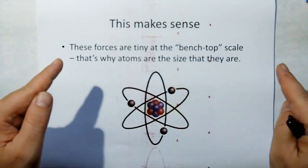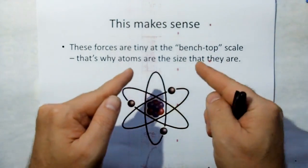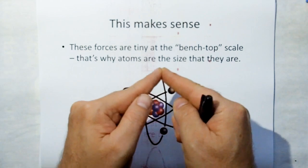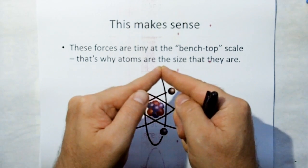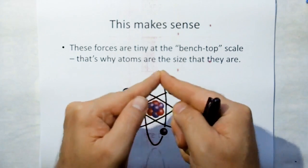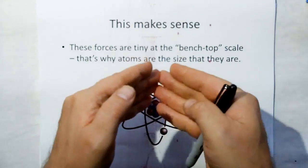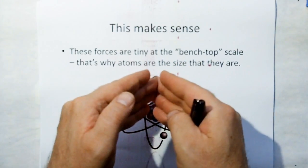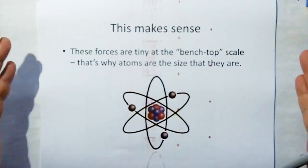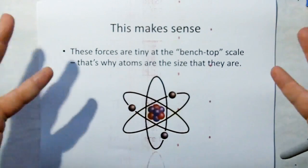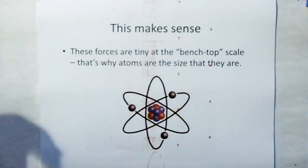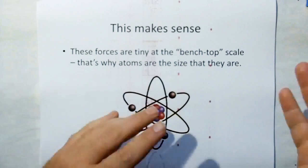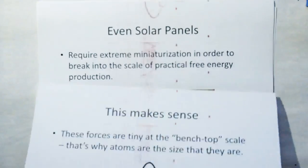But the reason why atoms are the size they are is because when those distances go down to the size atoms are, those forces become incredibly powerful. And that's why atoms are the tiny size they are. They're scaled down because that's where the forces make sense for them.